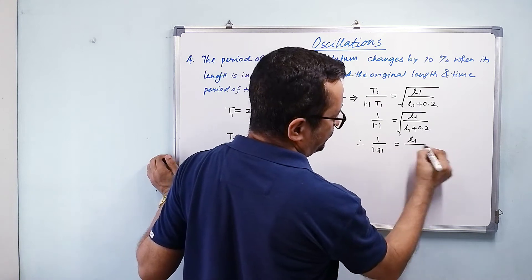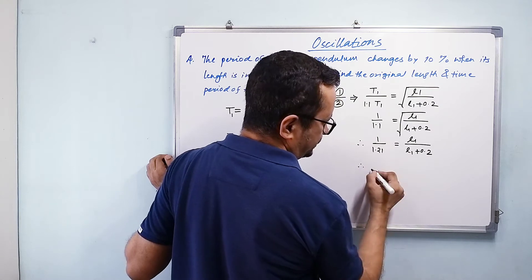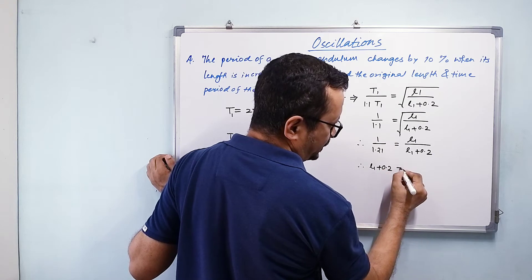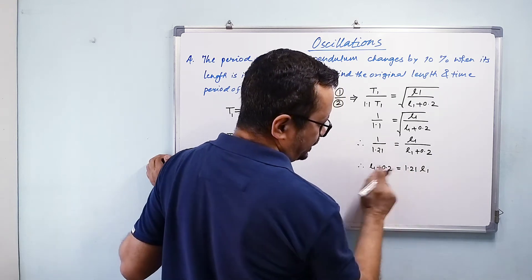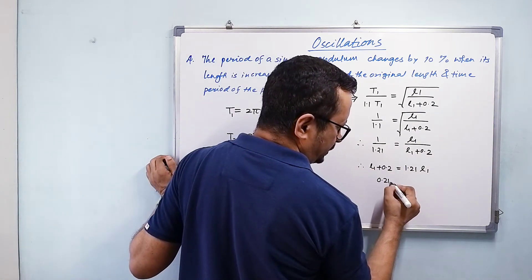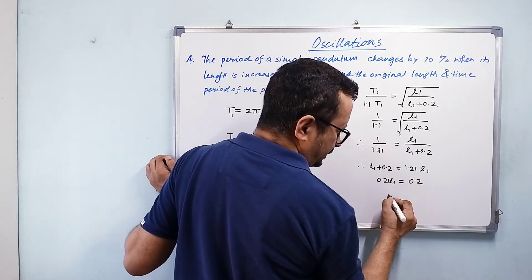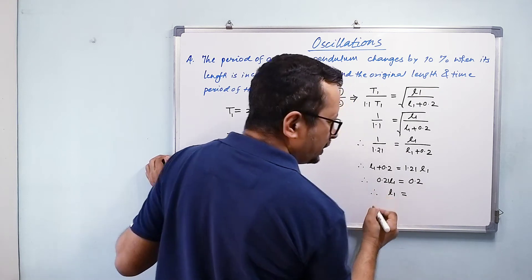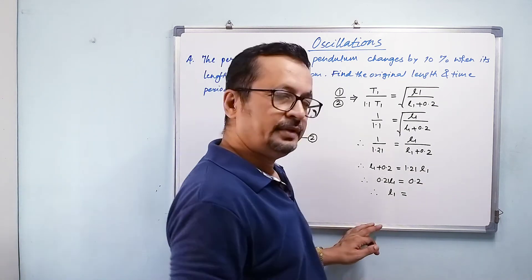Therefore, l₁ + 0.2 = 1.21l₁. If I take this l₁ on the other side, what I get is 0.21l₁ = 0.2, and therefore l₁ would be 0.2/0.21.